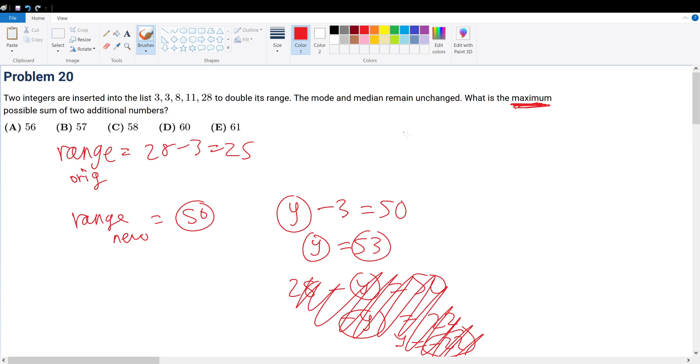So our new series for now becomes 3, 3, 8, 11, 28, and that's 53. No number can go above 53, and no number can go below 3. Any other number that we add must be within the range of 3 to 53. All right, so with this information, let's move on.